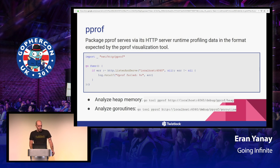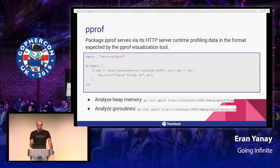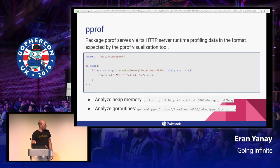Using pprof is very simple. The first thing we must do is import the pprof package, which calls its init function and registers the pprof profiling routes and handlers. We also need to listen using the regular HTTP with the default mux. I want to demonstrate two things: heap memory analysis to show exactly what is allocating all this memory, and an analysis of all the goroutines. We can run go tool pprof to the route debug/pprof/heap, and similarly for goroutines.